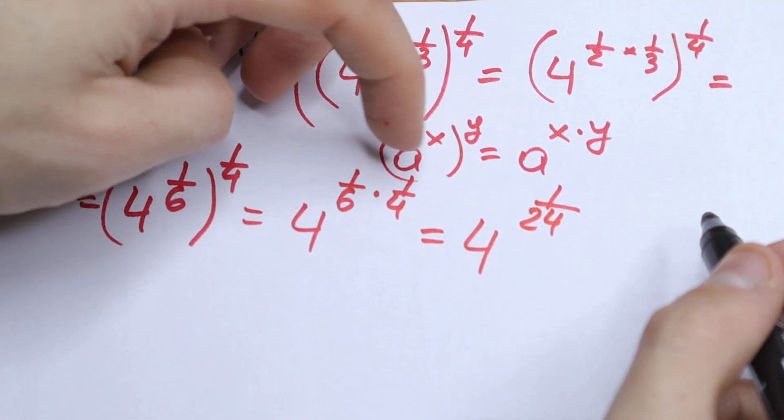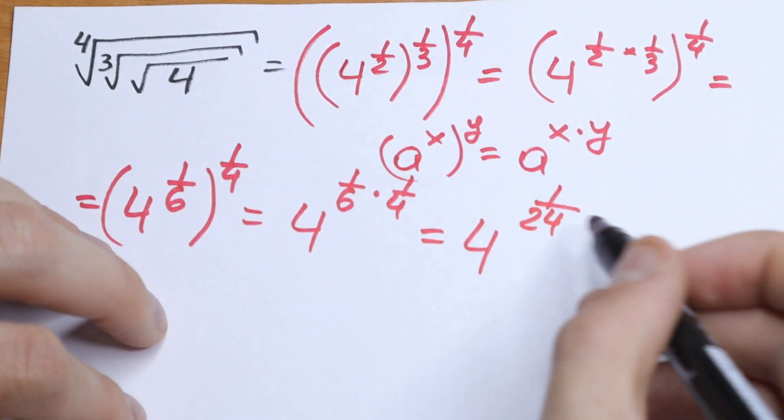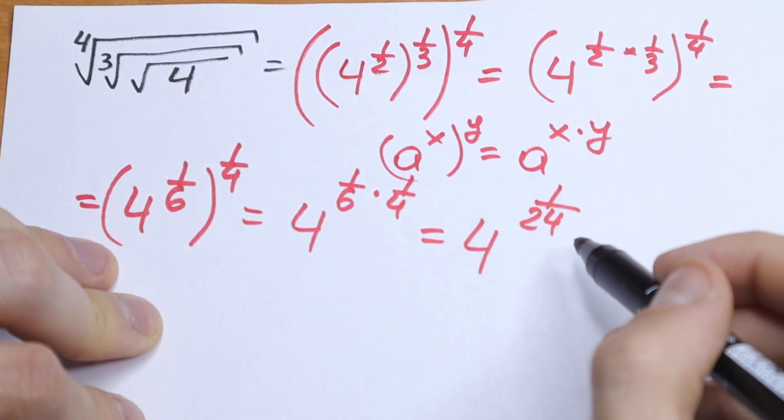Because we just multiply our numerator and denominator. So, one times one is one, and six times four is twenty-four. How can you simplify this?